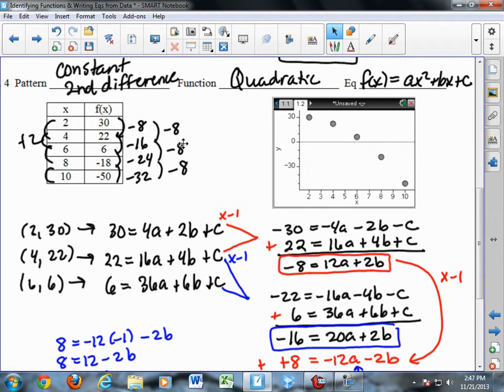Just as a note, if we were to do that pattern three times and then they all ended up the same, it would be cubic. Or if we did that pattern four times until they all ended up the same, it would be an x to the fourth equation.